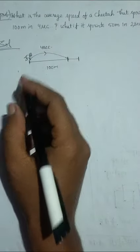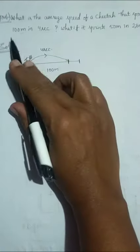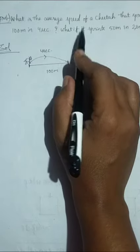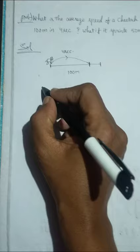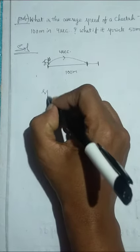Okay, let's solve a problem. What is the average speed of a cheetah that sprints 100 meters in 4 seconds? What if it sprints 50 meters in 2 seconds? So let's see, here we need to use a formula for speed.